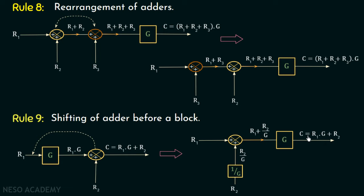In summary, if we shift an adder before a block we need to divide the gain of the block from the shifted input, and if we shift an adder after a block we need to multiply the gain of the block with the shifted input. We are now done with the discussion of block diagram reduction rules. We will discuss some examples based on these rules. Thank you for watching this lecture; see you in the next one.